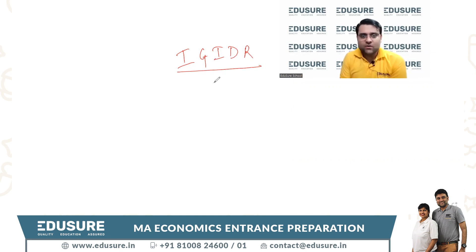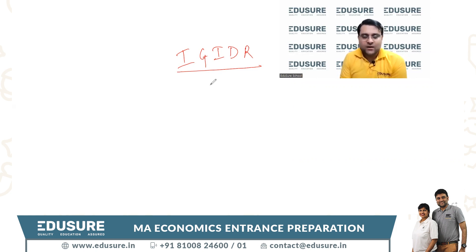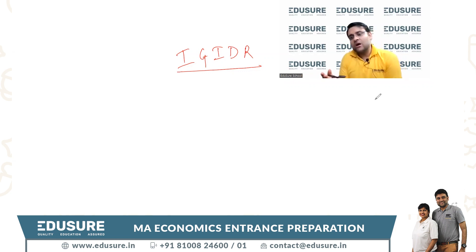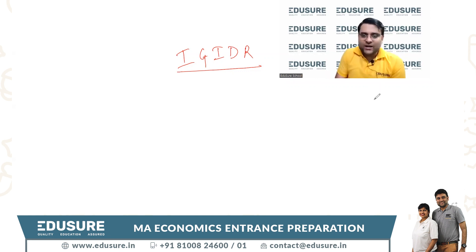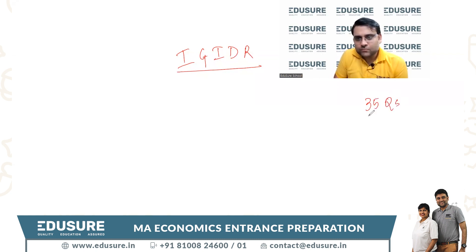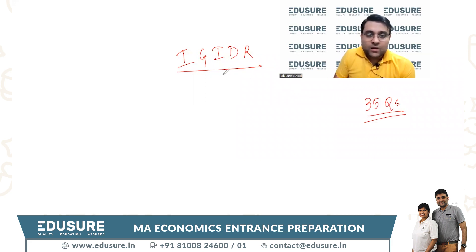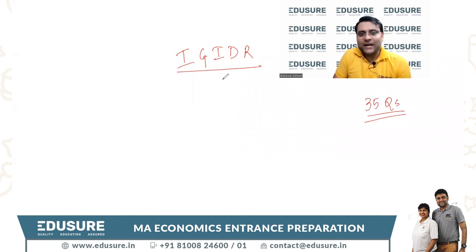Firstly, you need to understand the pattern of IJ IDEA, which many students have a doubt about. Till the year 2019, IJ IDEA had a specific pattern, then they changed their pattern for the COVID years, which were basically 2020 to 2022. In those years, they had simply 35 questions to appear for in 90 minutes. They have now reverted back to the earlier 2019 and before pattern.